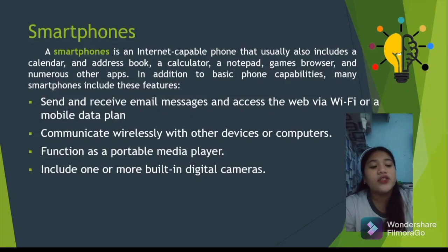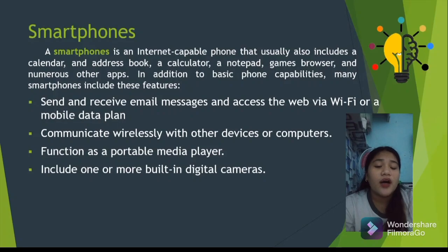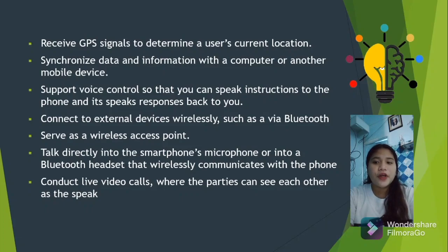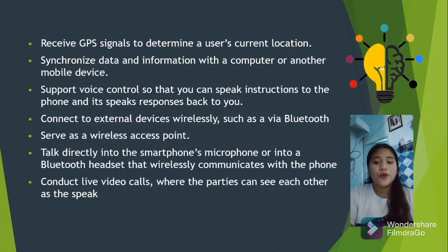Smartphones include one or more built-in digital cameras. For example, the Vivo smartphone has 4 cameras — one front camera and three rear cameras. They also receive GPS signals to determine the user's current location, can synchronize data and information with a computer or another mobile device, and support voice control so you can speak instructions to the phone. An example is Google, which can be commanded by voice to conduct research.